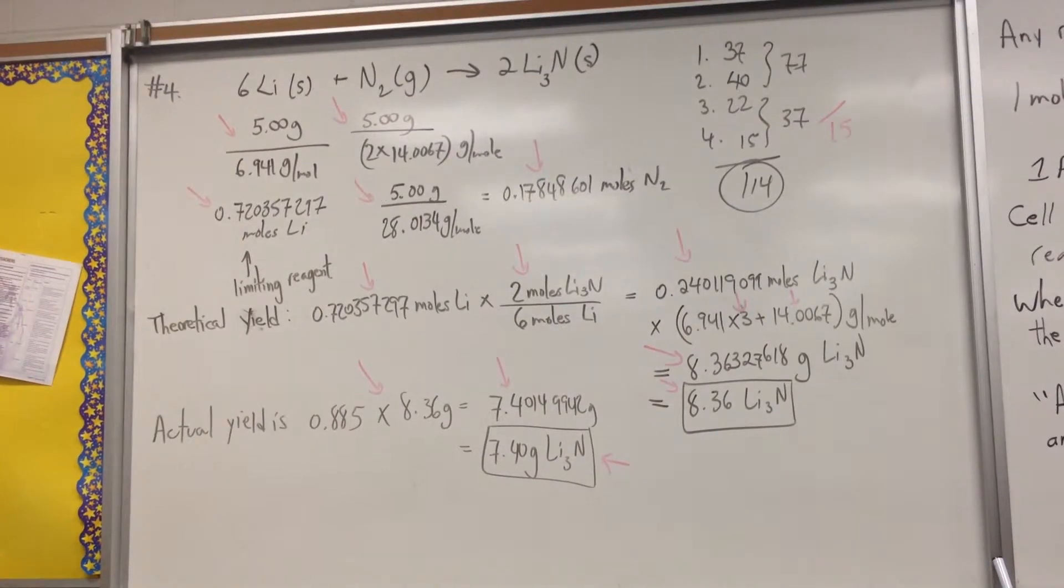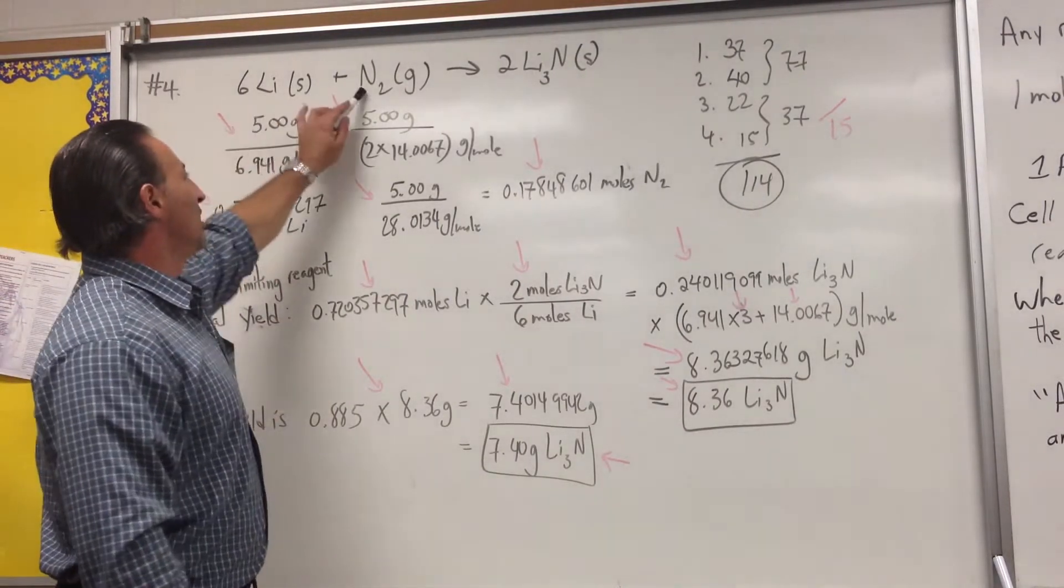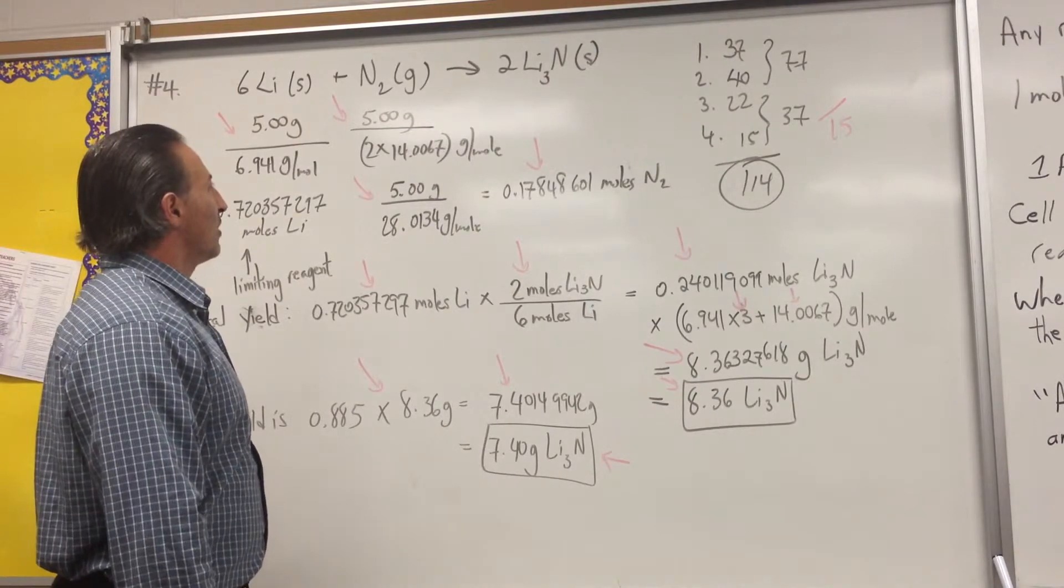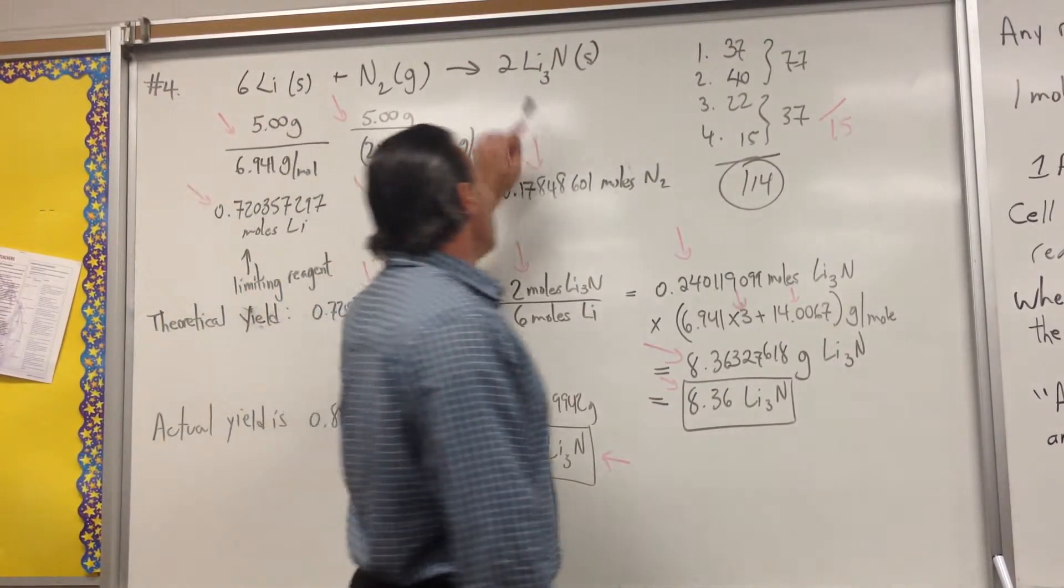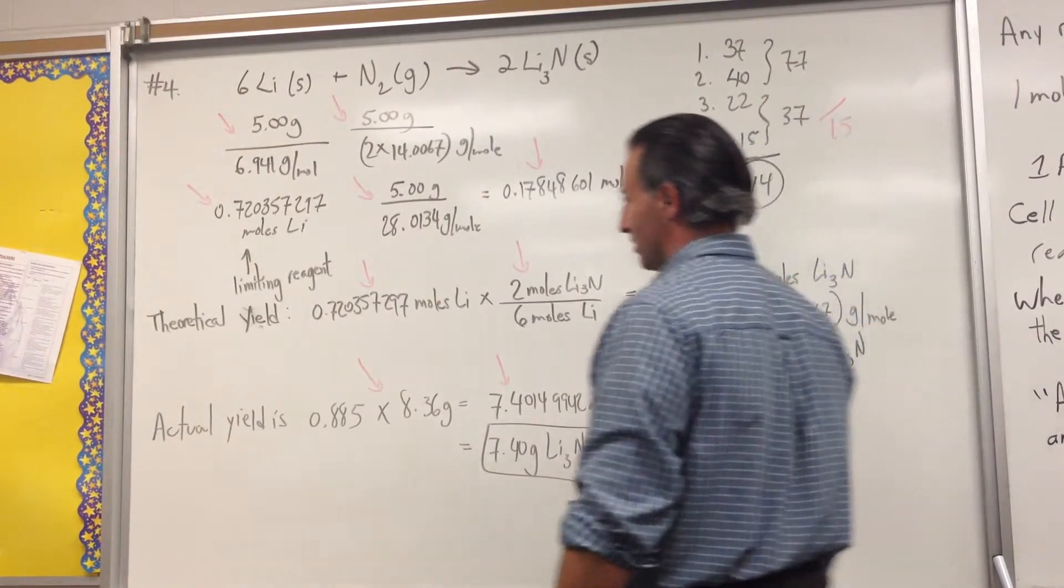The last question, question 4 asks, Lithium reacts with nitrogen to form lithium nitride. So, we see the chemical equation. Six lithium atoms combined with one nitrogen molecule, which is N2, is diatomic, to form two molecules of lithium nitride. Li3N is the formula for lithium nitride.